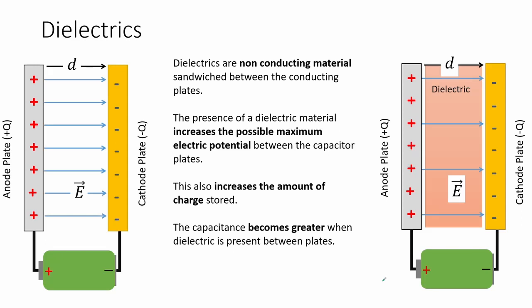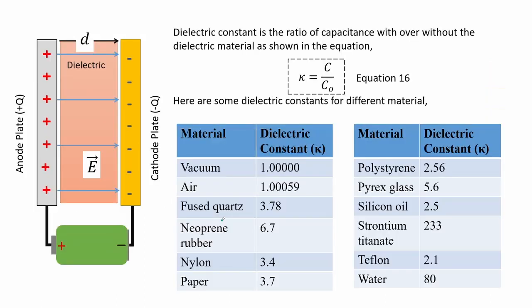Dielectrics are non-conducting materials sandwiched between the conducting plates. The presence of a dielectric material increases the possible maximum electric potential between the capacitor plates, which also increases the amount of charge stored and makes the capacitance greater. The dielectric constant is the ratio of capacitance with versus without the dielectric material, as shown in equation 16. For example, in vacuum it equals 1, and for water it is 80. The dielectric constant is a dimensionless parameter.